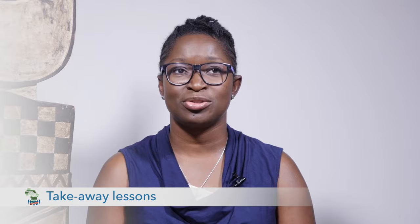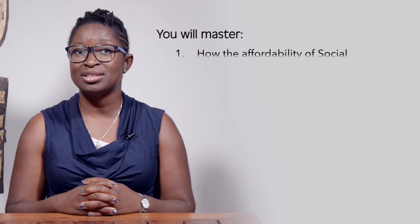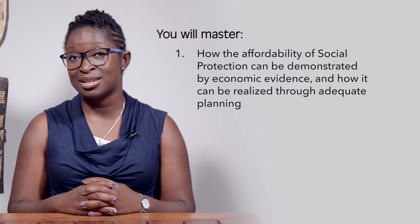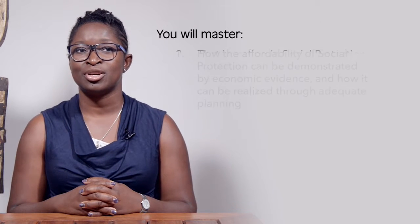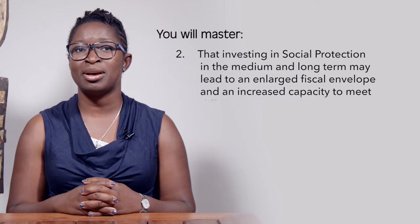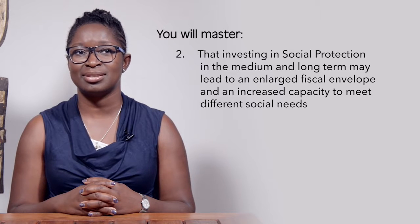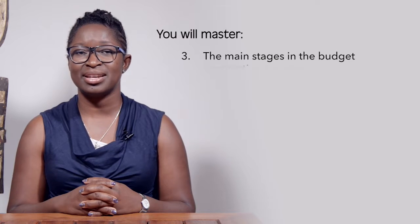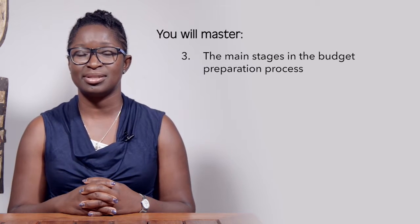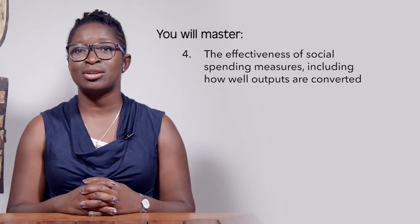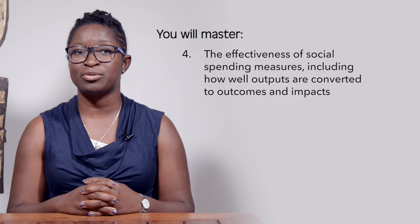At the end of the module, you will learn: one, how the affordability of social protection can be demonstrated by economic evidence, and how it can be realized through adequate planning. Two, that investing in social protection in the medium and long term may lead to an enlarged fiscal envelope and an increased capacity to meet different social needs. You will also learn the main stages in the budget preparation process. And finally, you will learn the effectiveness of social spending measures, including how well outputs are converted to outcomes and impacts. Thank you for listening.